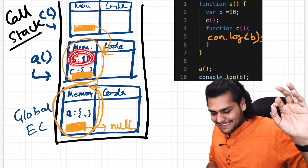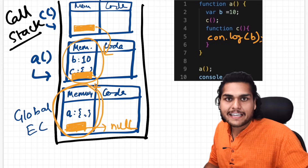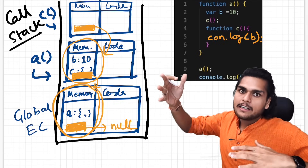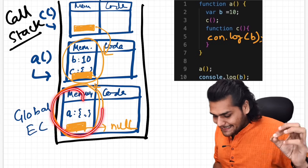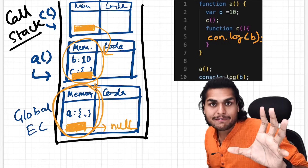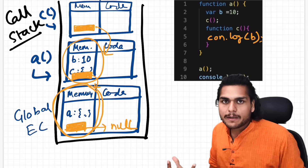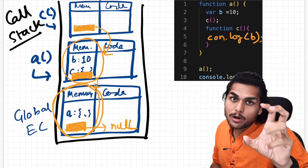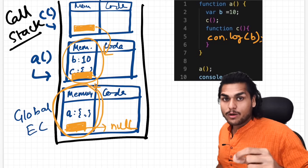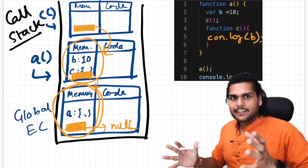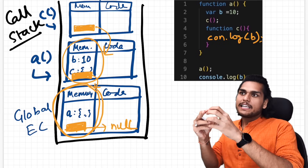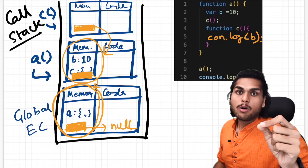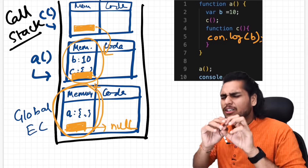Suppose `b` was not in `a` either. Then after searching `a`'s lexical environment, it would go to `a`'s parent — the global execution context's lexical environment. If `b` is not declared anywhere in the code, it then goes to global's parent, which is null. At that point there are no more lexical environments to search, so the JavaScript engine says `b is not defined`.